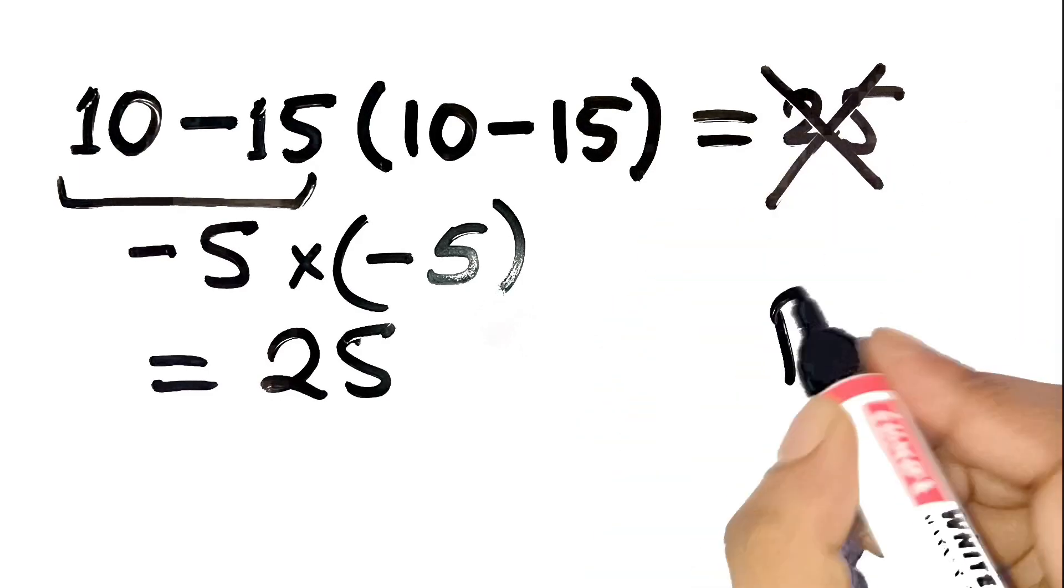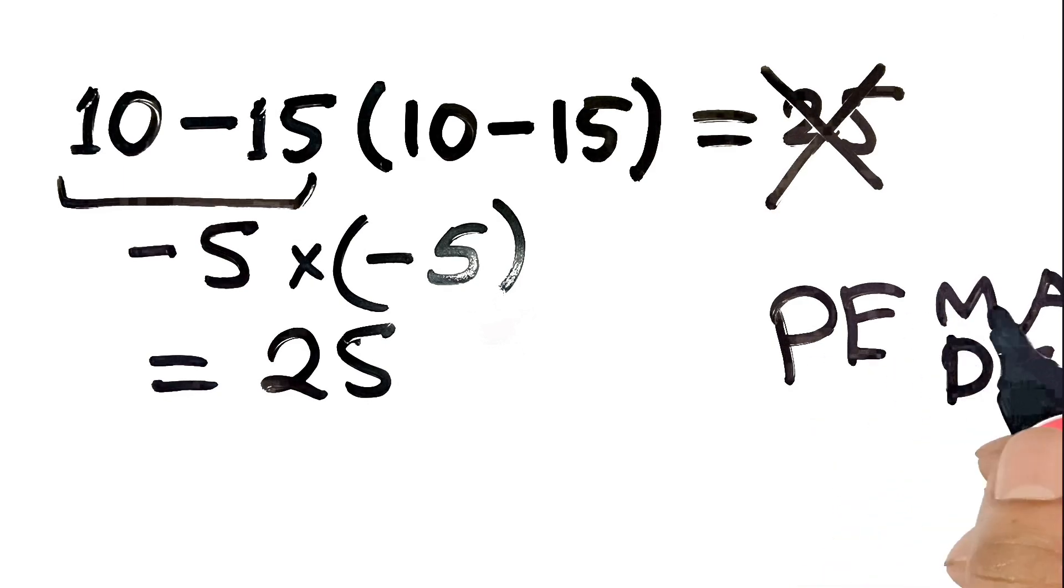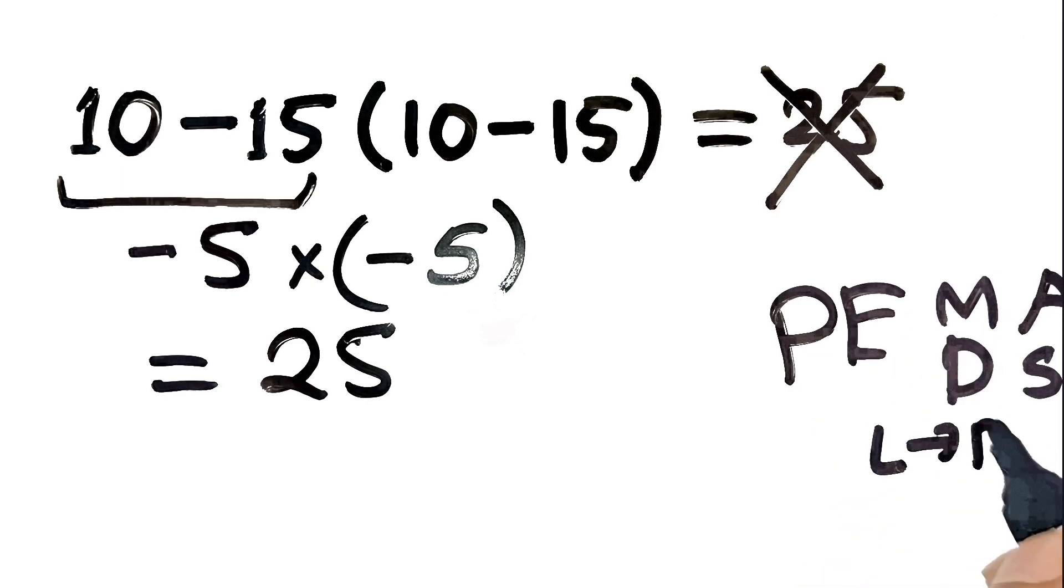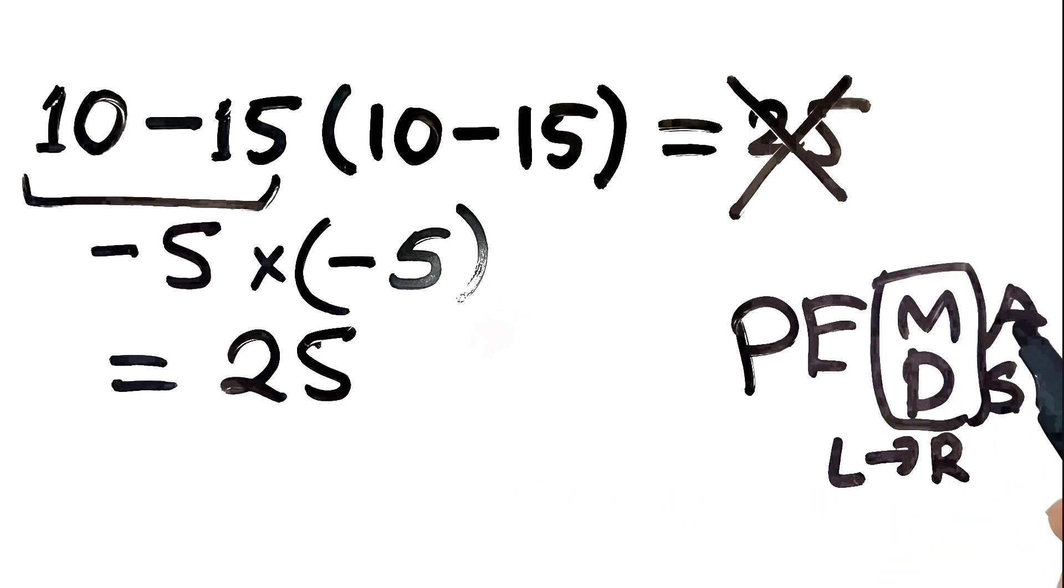Let's take a step back and remember PEMDAS. That's parentheses, exponents, multiplication and division from left to right, and then addition and subtraction. Important thing here, multiplication comes before subtraction.